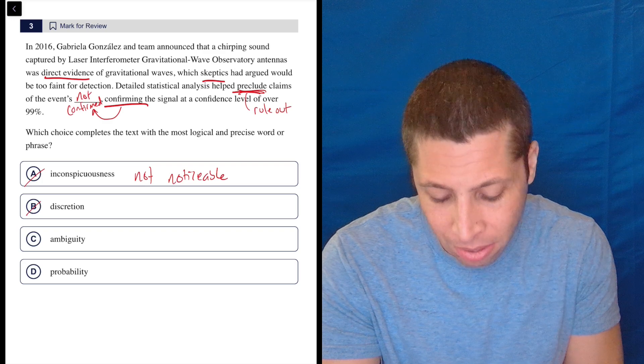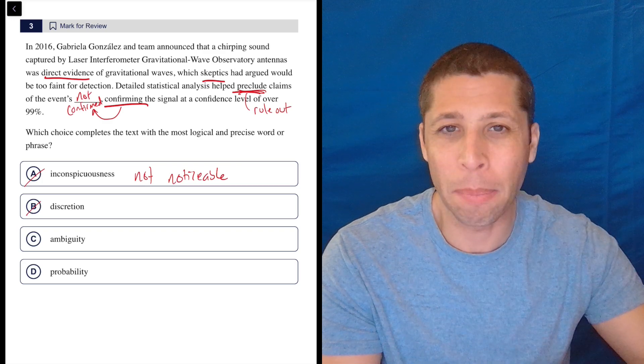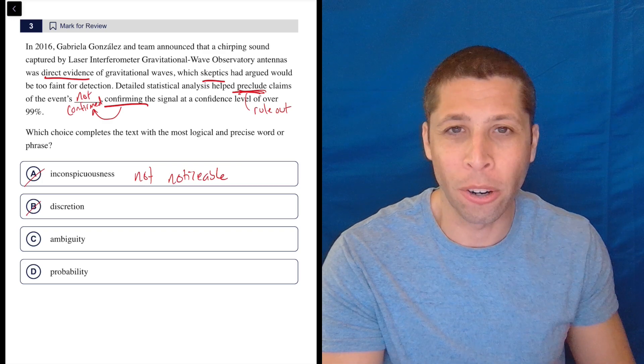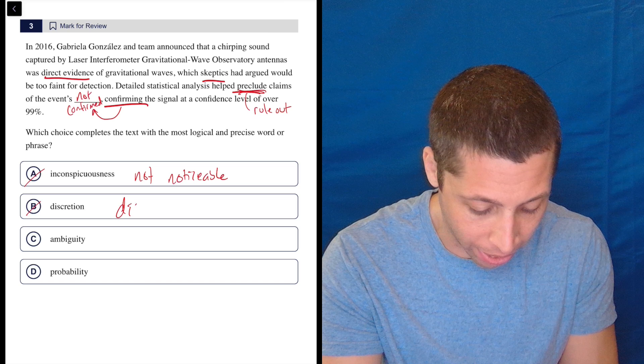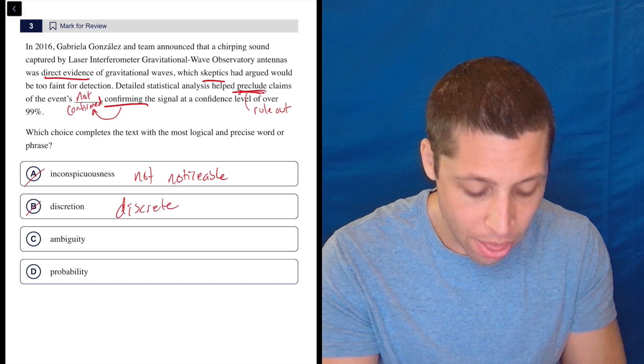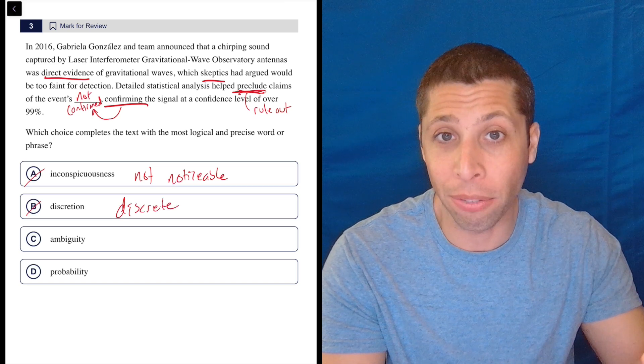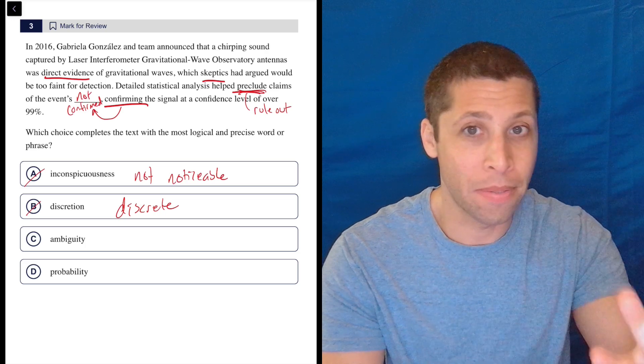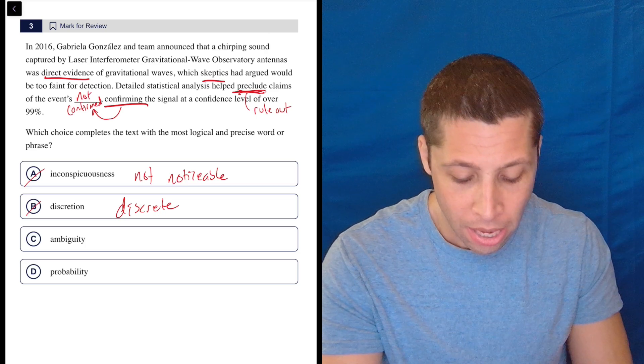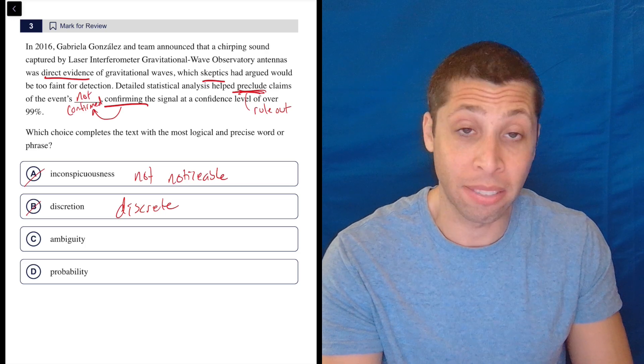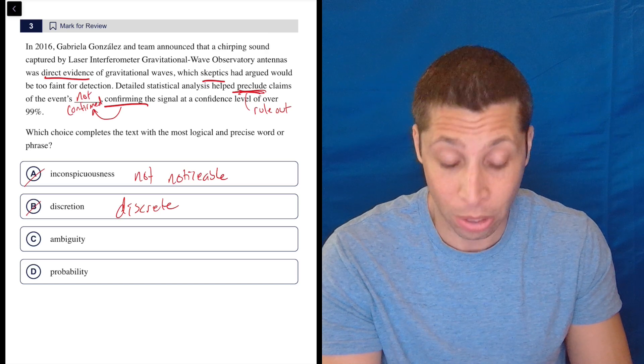Discretion is about not telling people secrets. If you are discreet, then you are able to keep things to yourself and not offend people or say what you're not supposed to say. So I don't even know what that has to do with this situation at all. It doesn't make any sense.